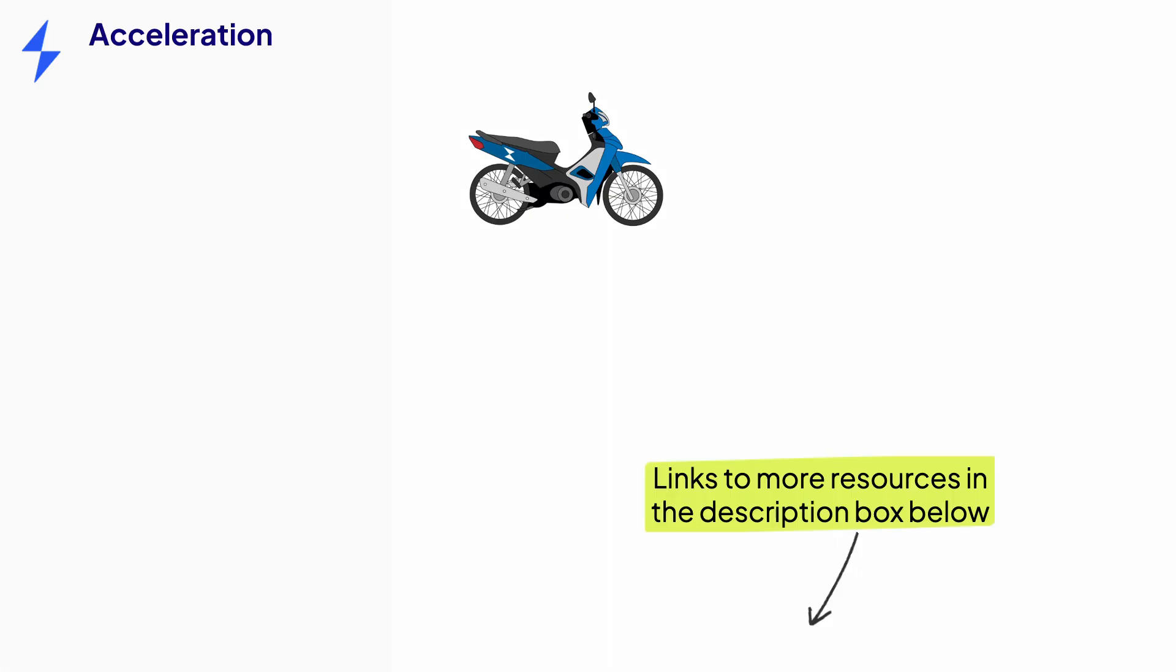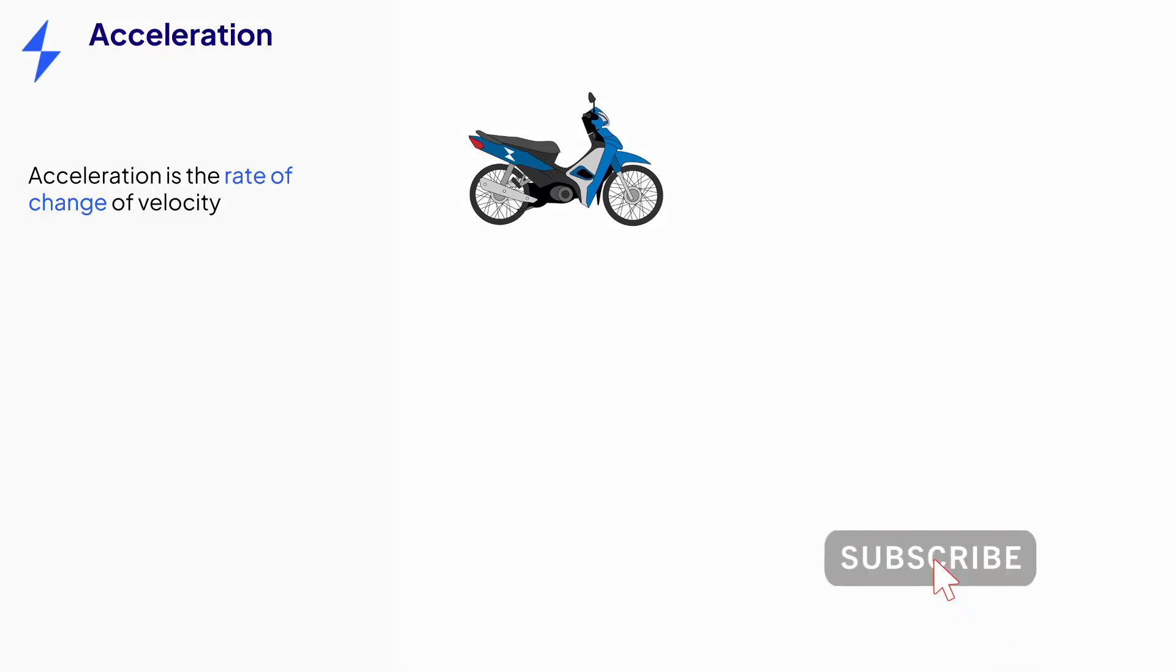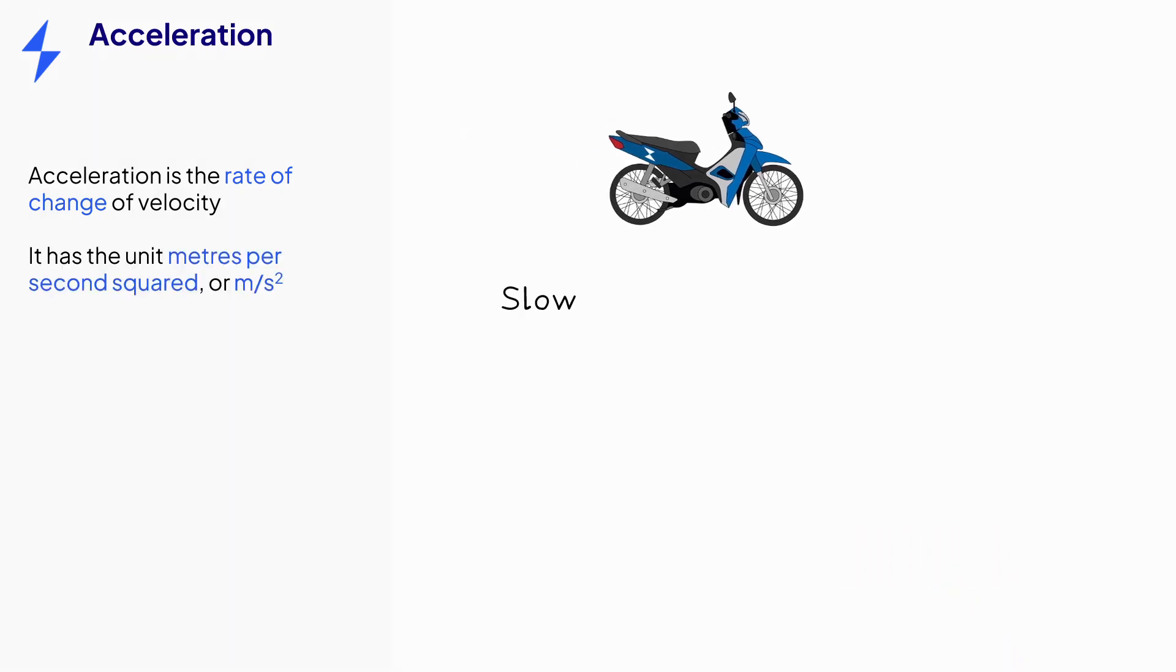In this video we'll be covering acceleration. While velocity is defined as change in distance per unit time, acceleration is change in velocity per unit time. This gives acceleration units of meters per second per second or meters per second squared.